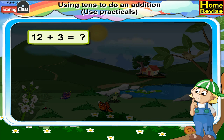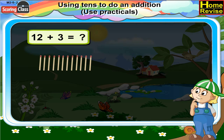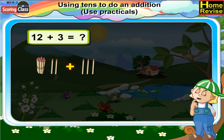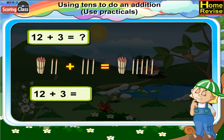So 14 plus 1 is equal to 15. Now, 12 plus 3. First, let us take 12 matchsticks. Make a bundle of 10 matchsticks, which is a 10, along with 2 more matchsticks, so it is 12. Now add 3 more matchsticks to it. It becomes 15. So 12 plus 3 is equal to 15.